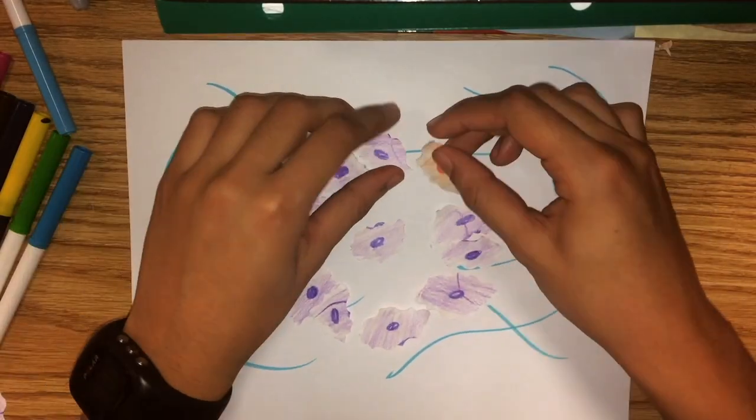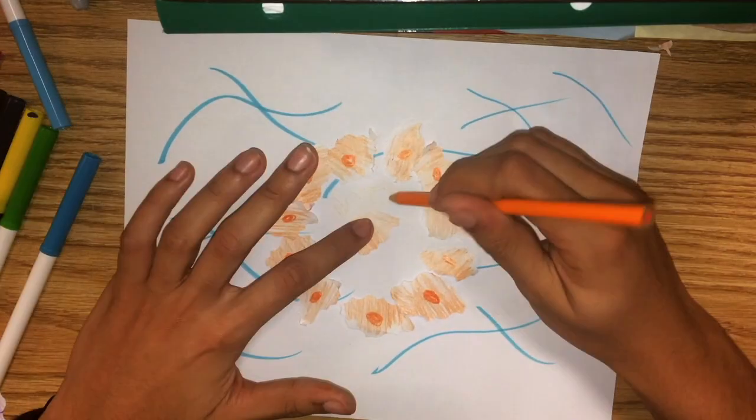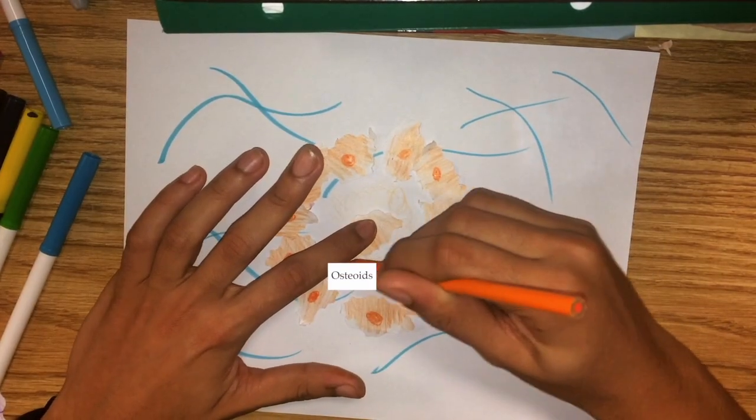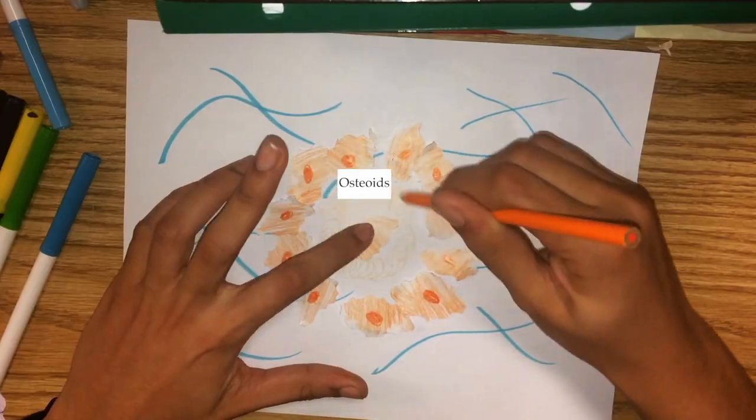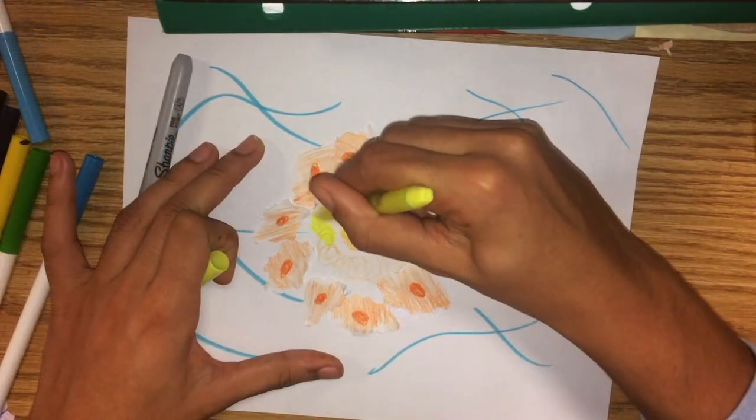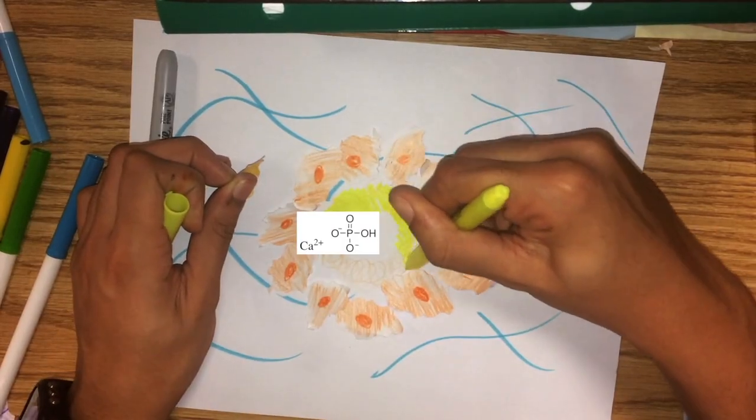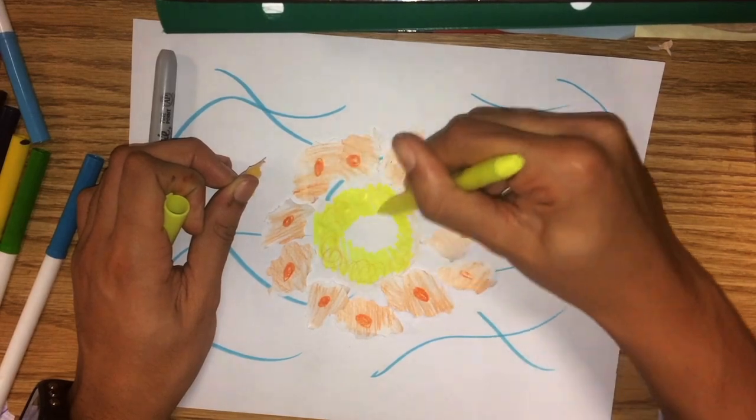Then they transform into osteoblasts, which are bone building cells. The osteoblast then releases an uncalcified bone matrix called osteoid. The bone matrix calcifies with the help of calcium phosphate and other minerals. This hardens the bone matrix.